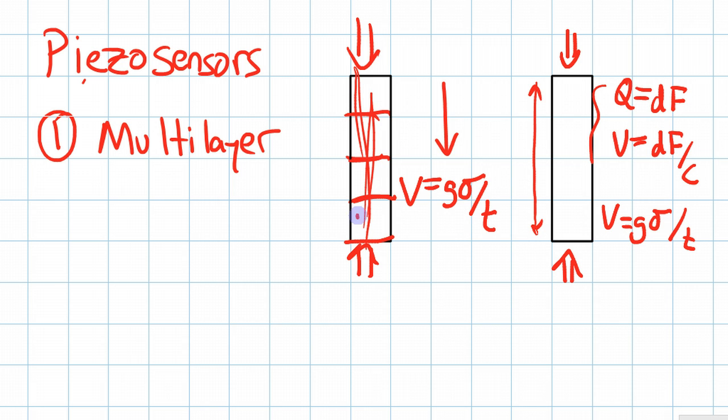So because we have one, two, three, four sections, we can put a four down here. Oh, sorry, the thickness is divided by four. So we end up with a four on the top, and thereby we have a larger piezoelectric constant, or sorry, a larger voltage developed from an equivalent force on these same structures.